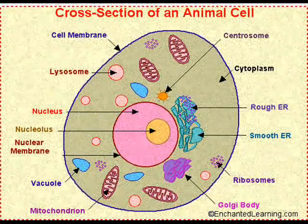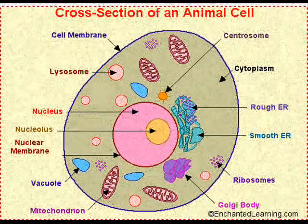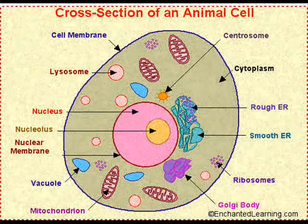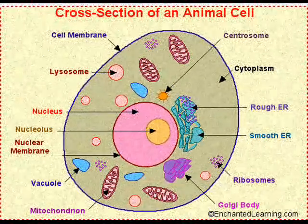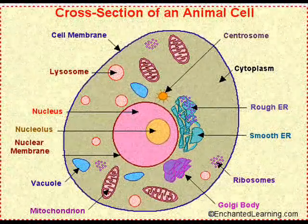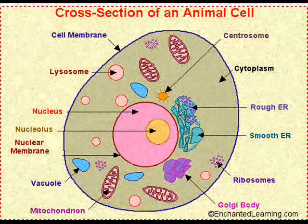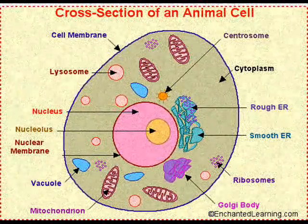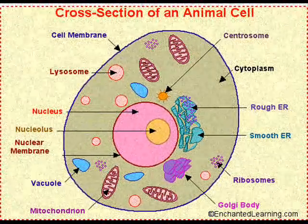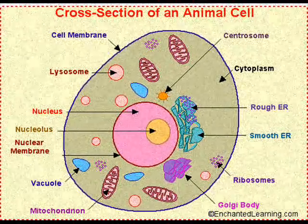Golgi bodies are, in a sense, like the hotel parking garage. They hold and store the secretions of the cell. Vacuoles are like the small gift shops in the hotel that sell all the chestnuts and drinks and stuff. Basically, they store food, water, and waste.